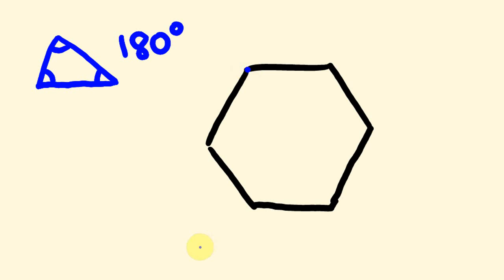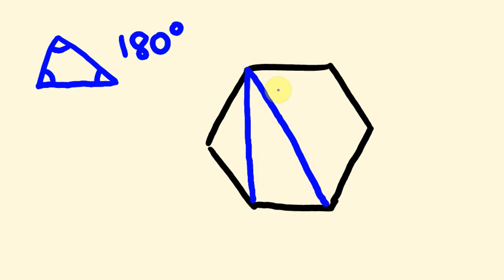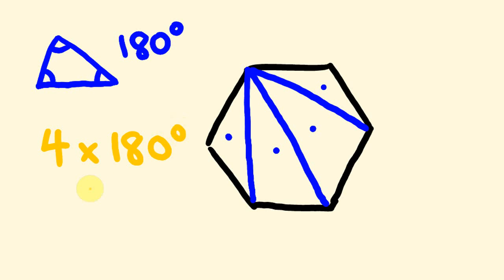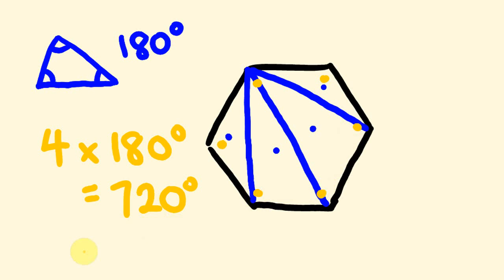Starting from one of the corners, one of these points, we're going to start making triangles. So I have one triangle, two triangles, three triangles, and a fourth triangle — four triangles in total. Each of these triangles is 180 degrees, so four times 180 degrees gives us our answer. Four times 180 is 720 degrees. So the total of these angles within this hexagon is 720 degrees.